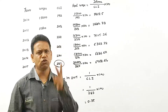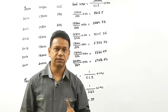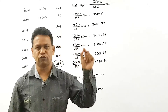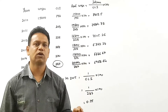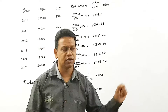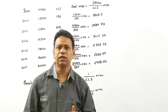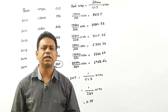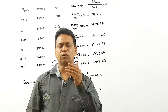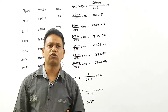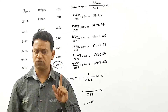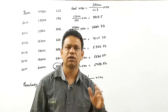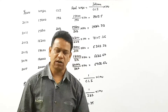I will repeat the two important formulas. One: real wages equals wages divided by cost of living index number into 100. Two: whenever they ask to find out purchasing power of money, purchasing power of money equals 1 divided by cost of living index number into 100.